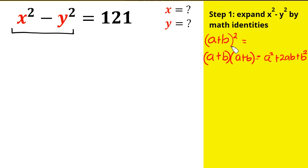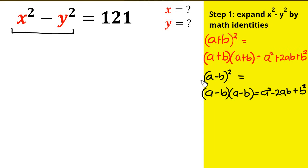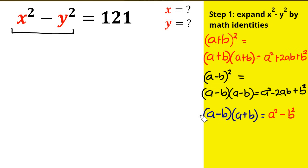Remember one of the identities: when we have (a + b) squared, it expands as (a + b)(a + b), giving a squared plus 2ab plus b squared. Similarly, (a - b) squared expands as (a - b)(a - b), giving a squared minus 2ab plus b squared.